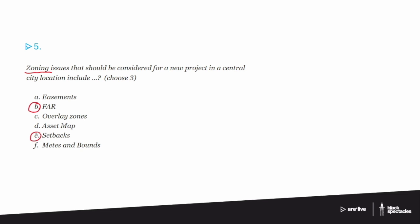So the big question is the next one - it could be easements, it could be overlay zones. Asset map is actually just a thing that you do, not really part of the zoning. It's a good thing to do, to map all the assets of the neighborhood, but it's not part of the zoning requirements. Meets and bounds is another interesting one, but meets and bounds is actually a type of surveying. So it's more of a survey question, not really a zoning question.